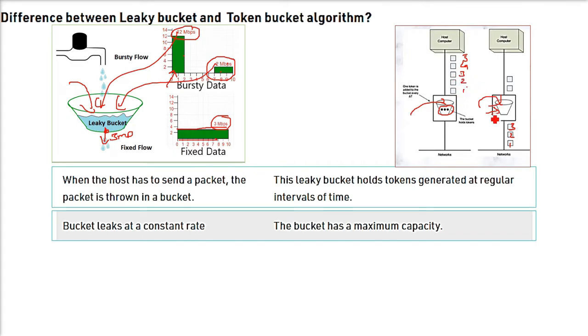In token bucket, the bucket has a maximum capacity. That is, capacity is the number of tokens. The next difference is the leaky bucket has constant flow rate. Here, the flow rate is not constant. It depends upon how many tokens are being generated, and that will only be generated with respect to the network situation.